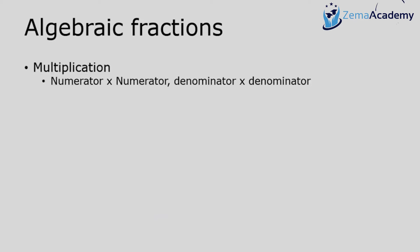For multiplication, we multiply numerator by numerator and denominator by denominator — the easiest fraction operation. For example, x over y multiplied by x over y gives x squared over y squared. If I multiply x over y by y over x, that's x times y over x times y, and anything divided by itself is one, so that equals one.